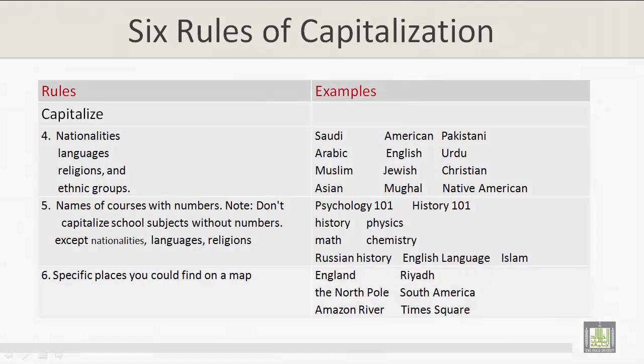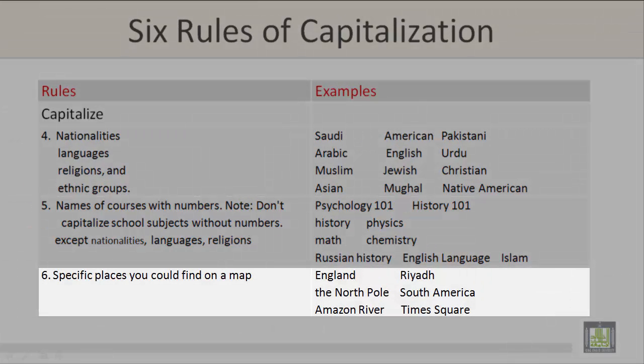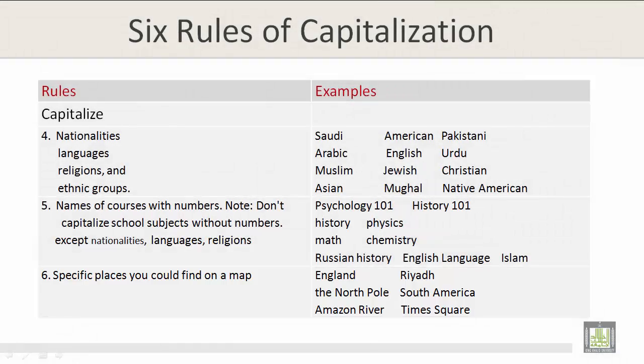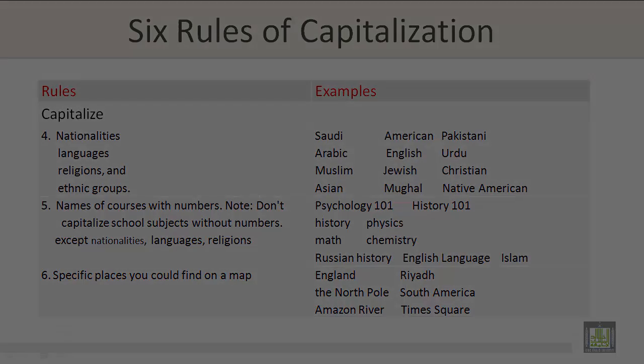Rule number six: specific places you could find on a map. For example: England, Riyadh, the North Pole, South America, Amazon River, and Times Square.